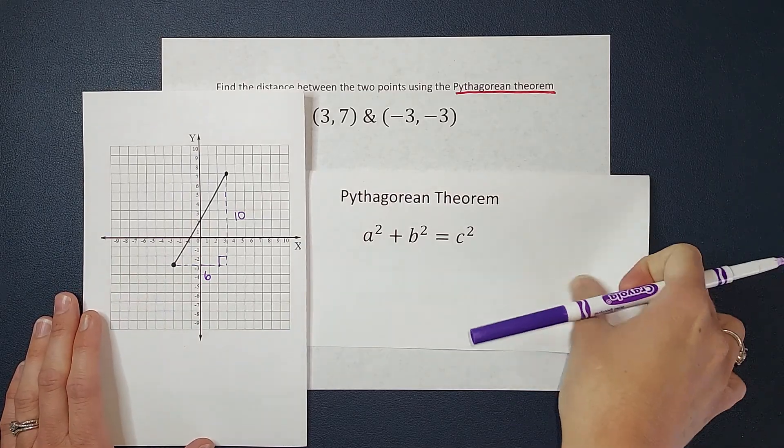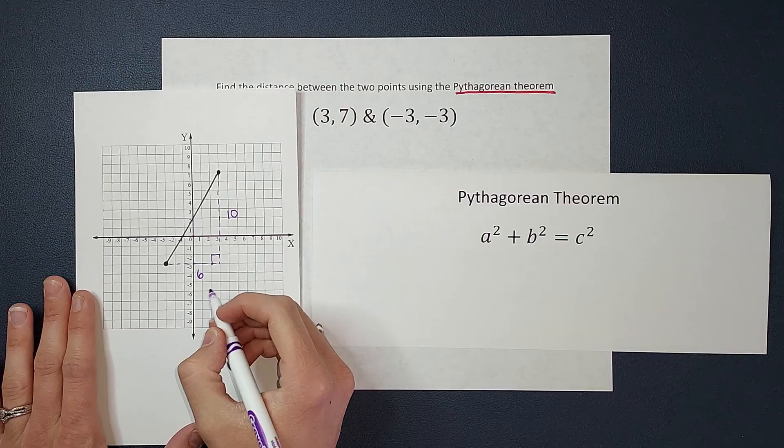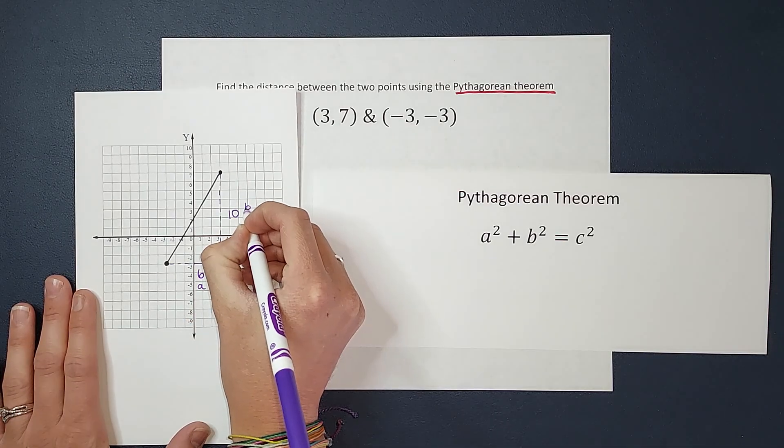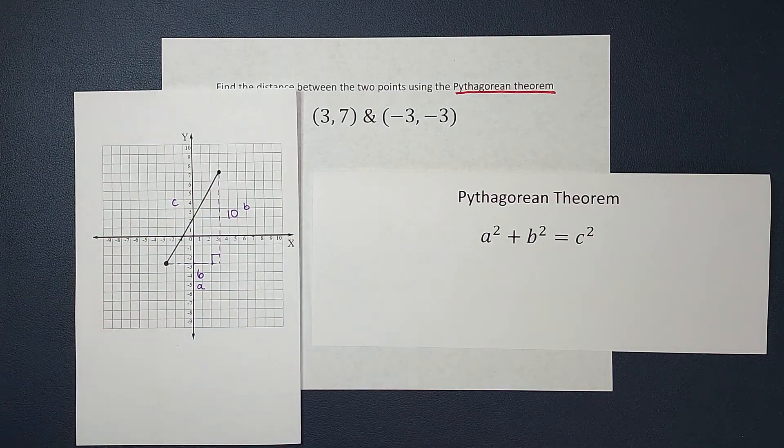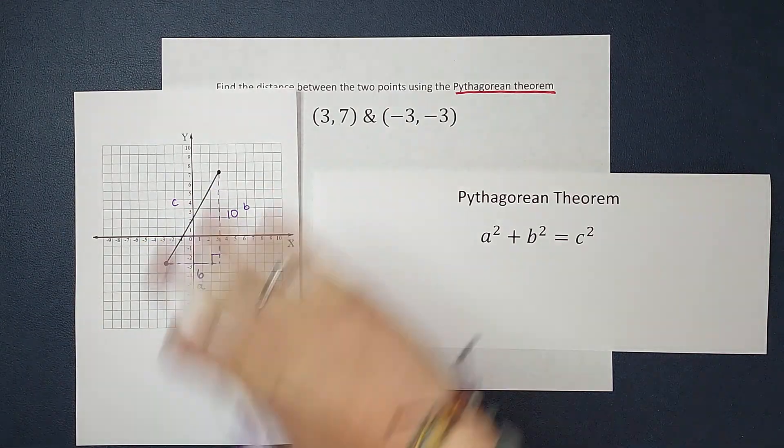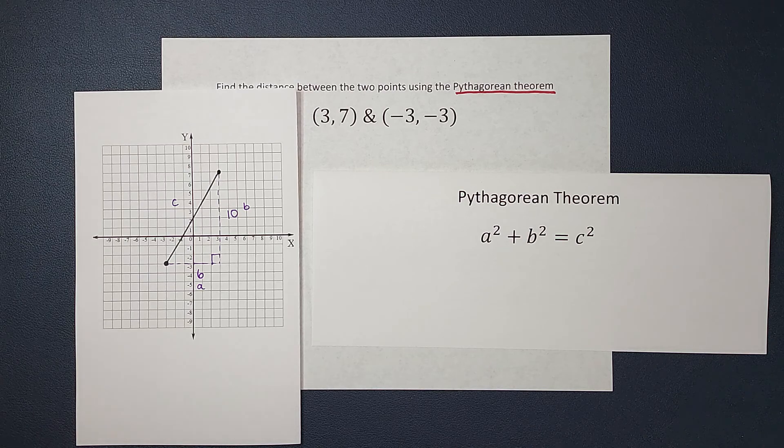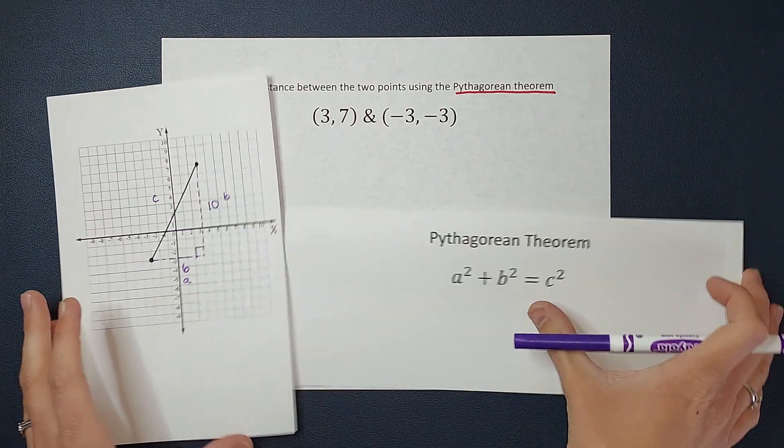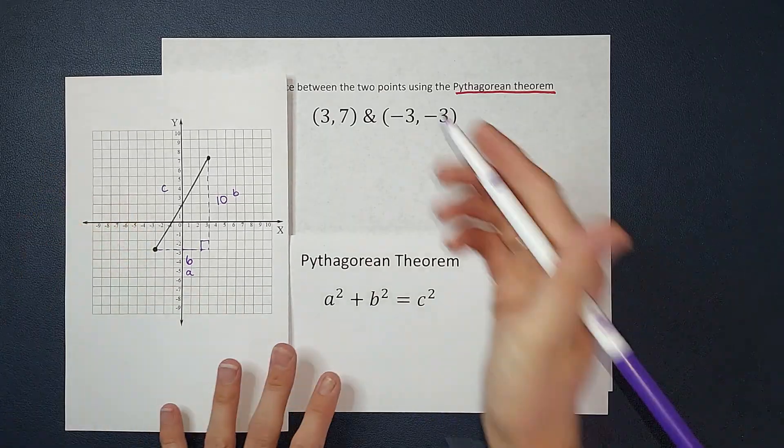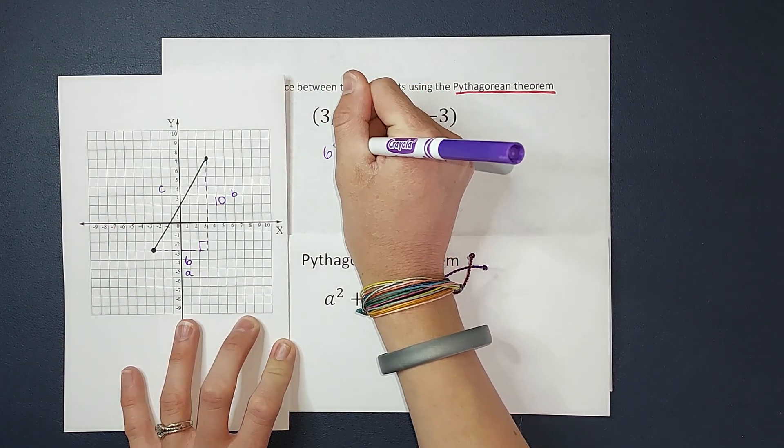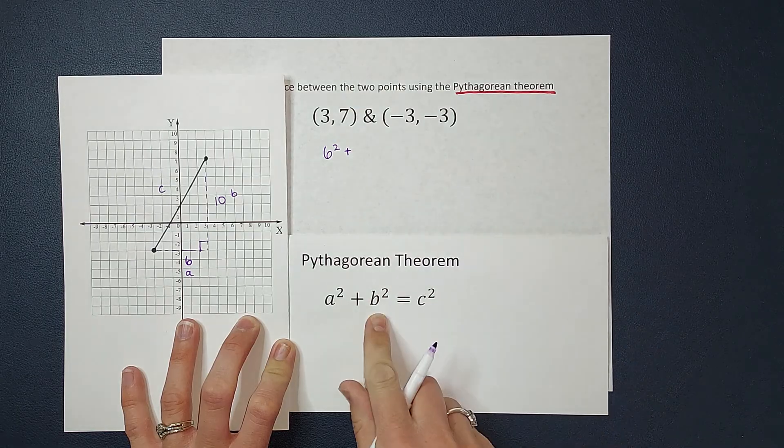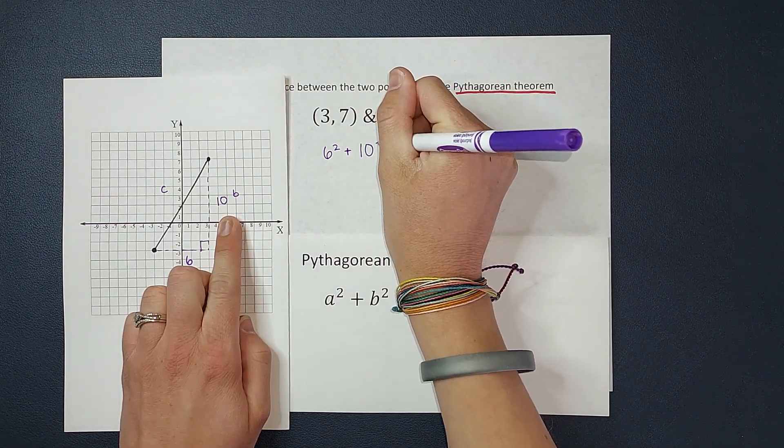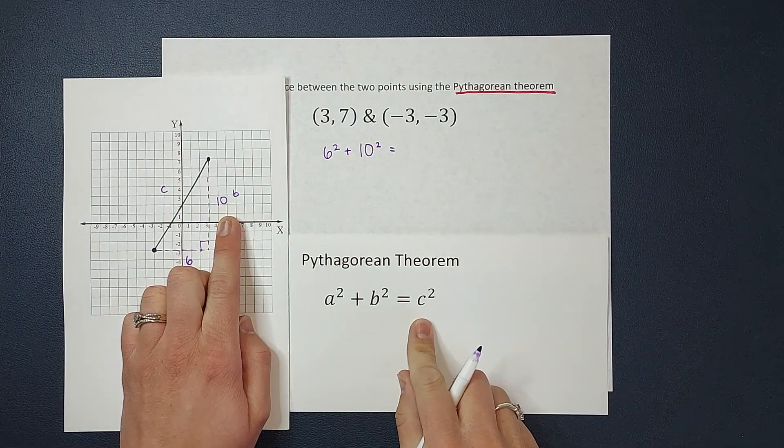So I am going to label these as a and b, and this is my c, which is what we're looking for, the distance between those two points. So I'm just going to start filling this in. We have 6² + 10² = c².